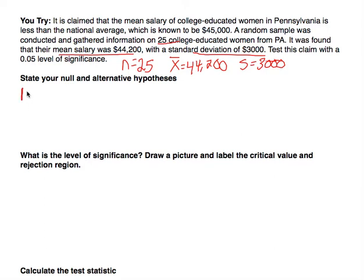We are going to have a null hypothesis and an alternative hypothesis. We are testing a claim about the mean, so we need to make an assumption about the population mean. The claim is that the mean salary of college-educated women in Pennsylvania is less than the national average, which is $45,000. So we are making a claim that it's less than.